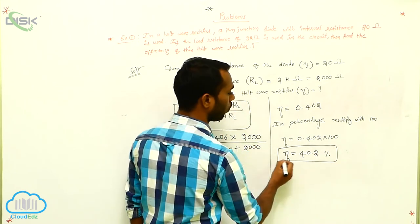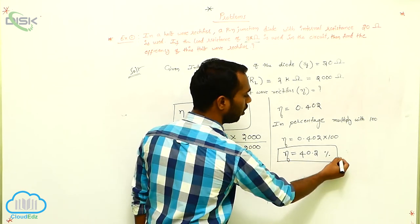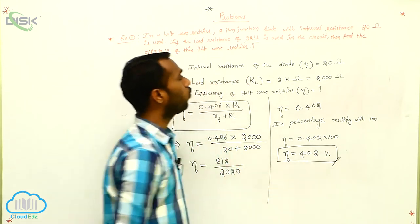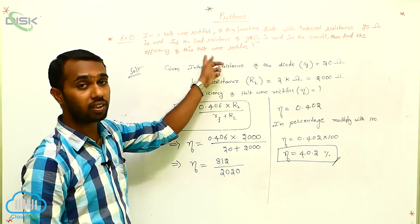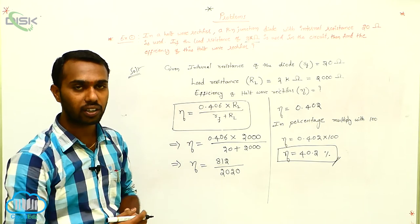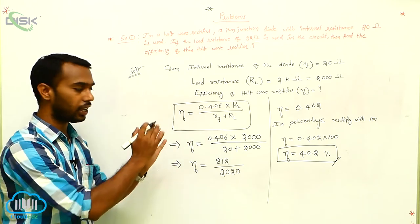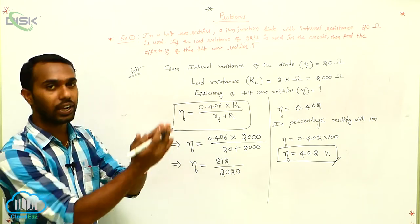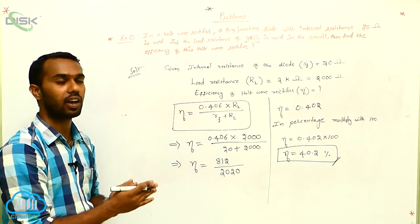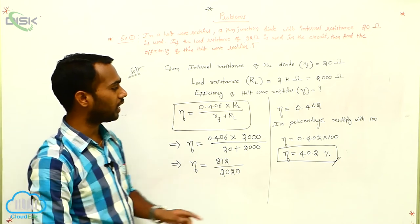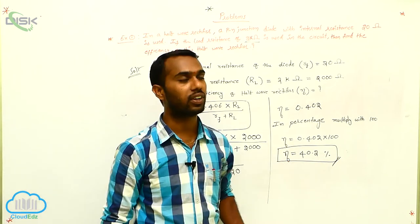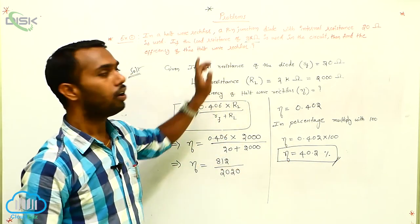The meaning of this result: this half wave rectifier is converting AC current into DC current at an efficiency of 40.2 percentage. This is our answer.